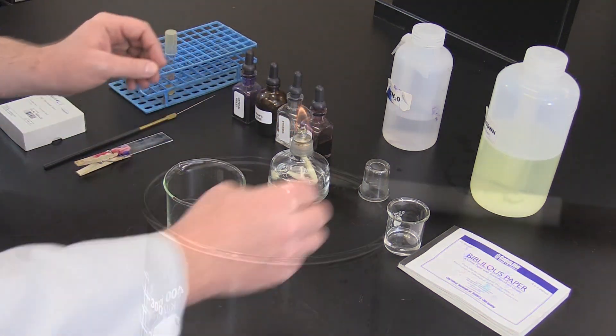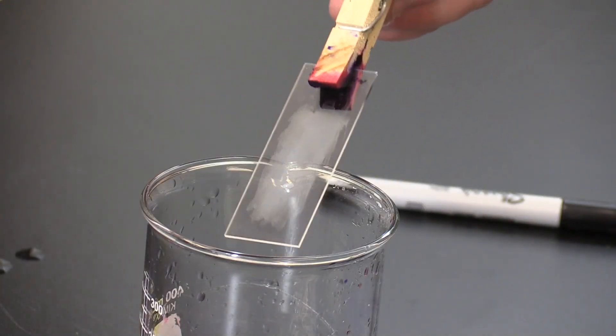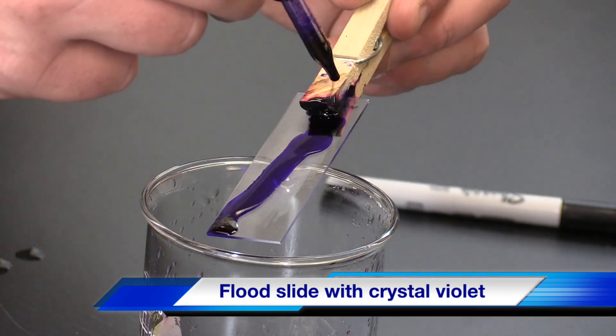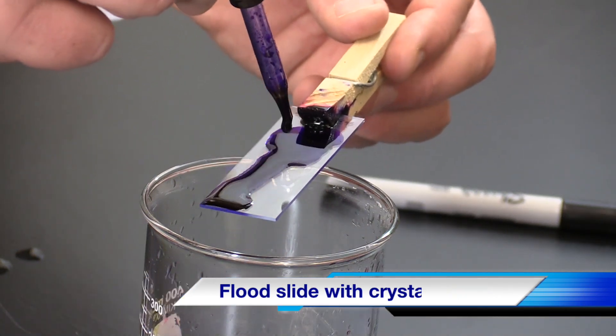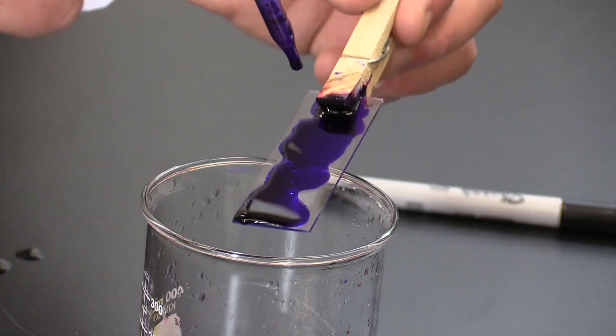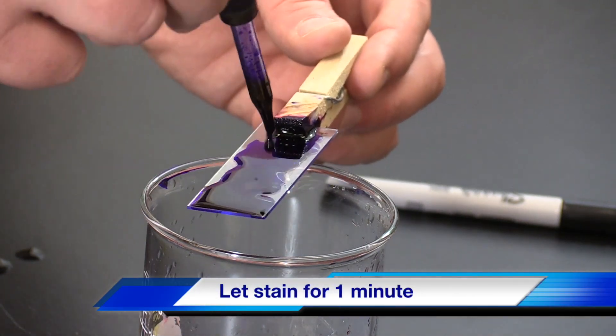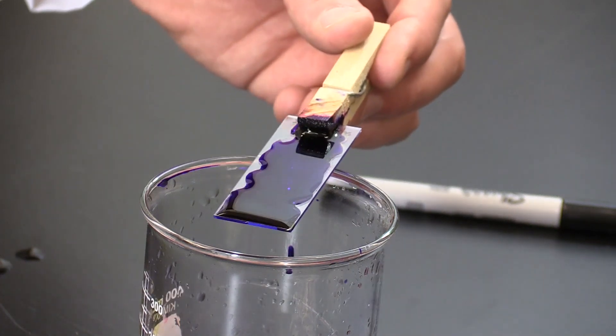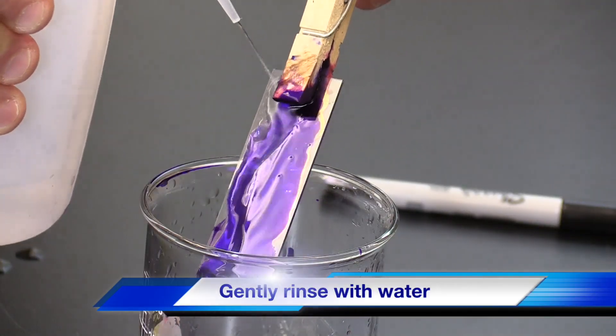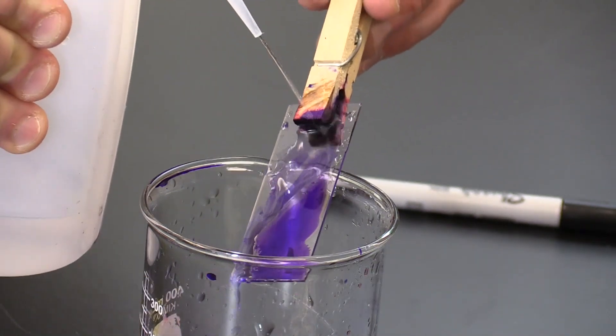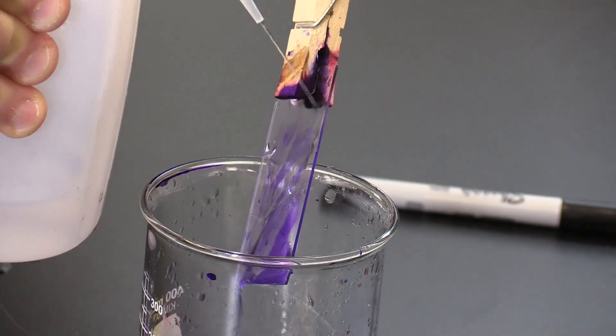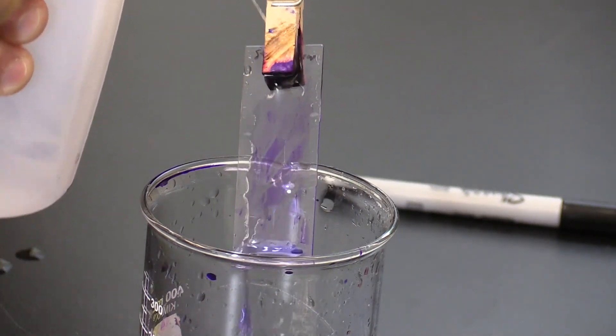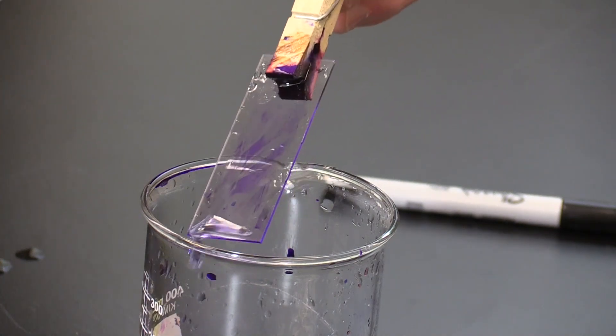Working over a sink or beaker, flood the slide with crystal violet to cover the bacterial smear. Allow to stain for one minute. After one minute, rinse the crystal violet away with water until the water running off the slide is clear. Take care to avoid directly spraying the smear with a jet of water when rinsing, as the bacteria in the smear can be washed off.